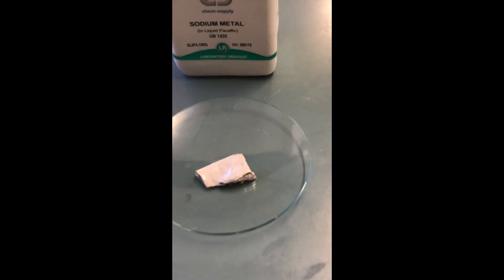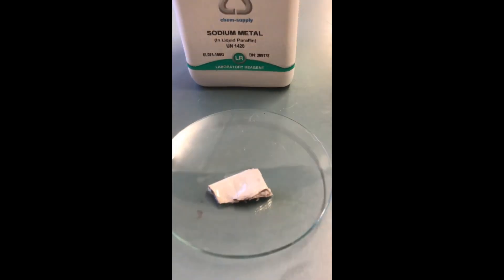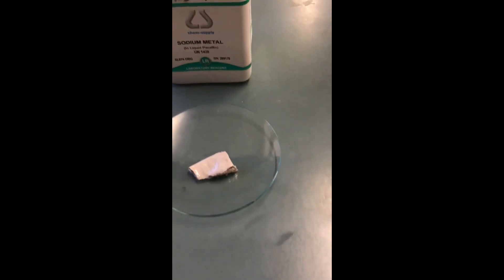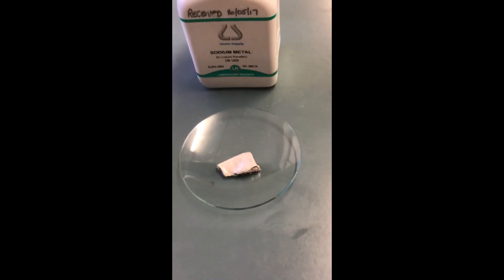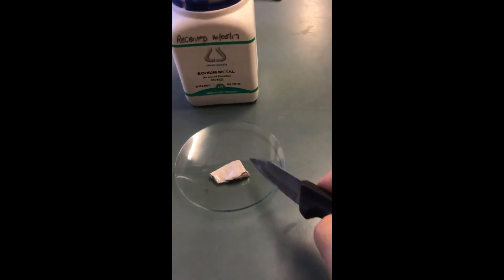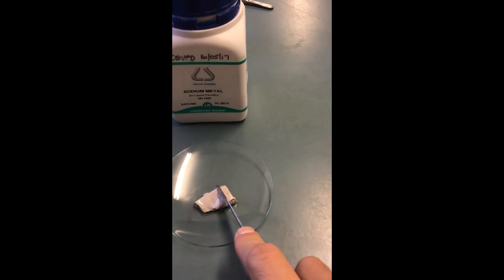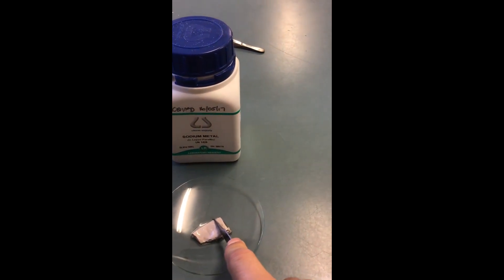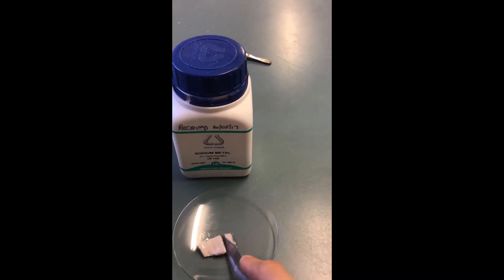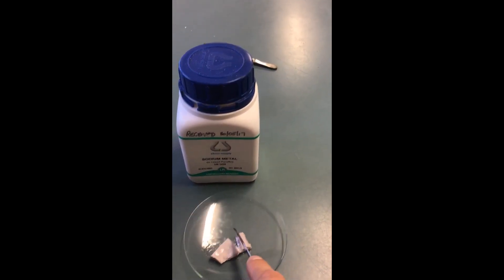So here's our sodium metal. Now you can see that there is not very shiny, like we said that metals need to be. Now why is it not very shiny? Because it's reacted with the oxygen in the air. Now what I'll do, I'll cut the sodium metal in half. It's very difficult to do one handed.